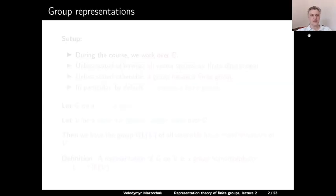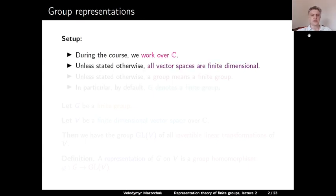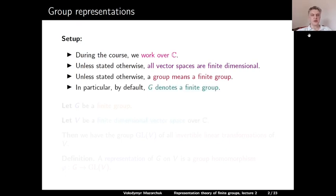Before we can define the notion of representation, let us recall our setup. During this course, we work over the field ℂ of complex numbers. Unless stated otherwise, all vector spaces which we consider are going to be complex vector spaces of finite dimension. Also, unless stated otherwise, a group is a finite group. In particular, we will use G as a default notation for a finite group.